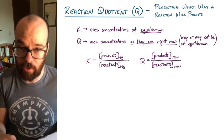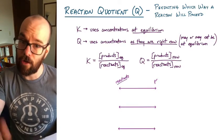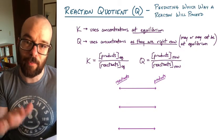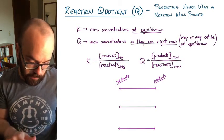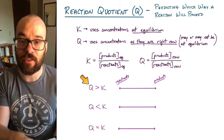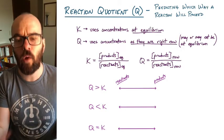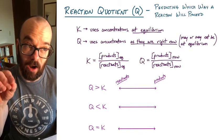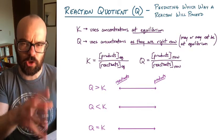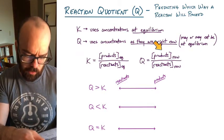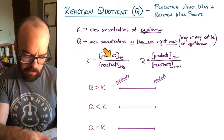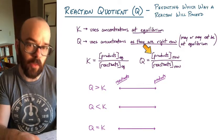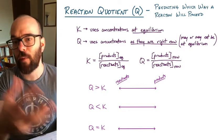There are three possibilities for Q. Q could be greater than K, Q could be less than K, or Q could equal K. If Q is greater than K, that means the reaction right now is favoring the products more than it should at equilibrium. Compared to the K ratio, the Q ratio favors the products more — we're too far on the product side, and it should shift back toward the reactants.